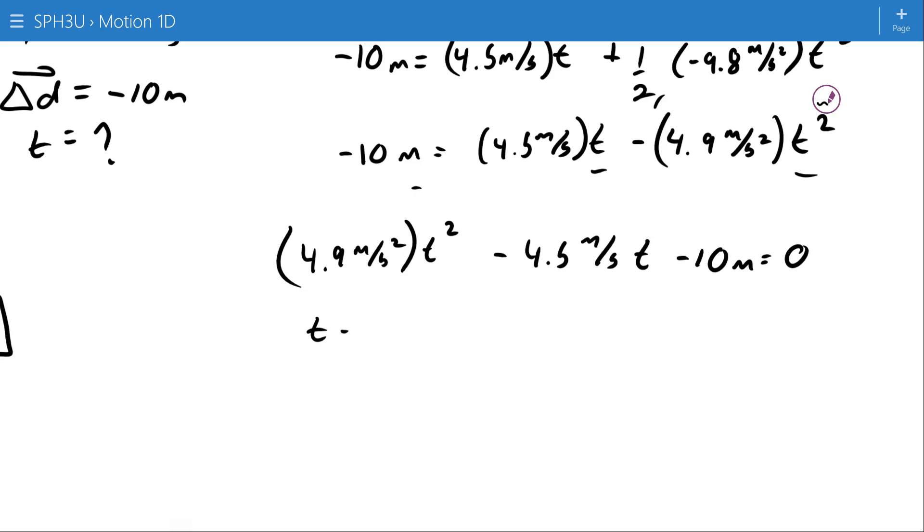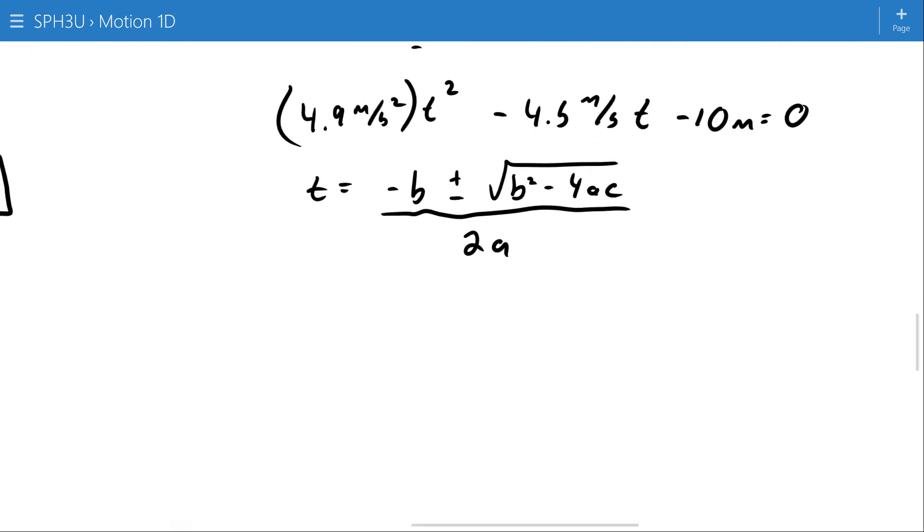And remember, the formula here is that T is equal to negative B, plus or minus the square root of B squared, minus 4AC, all divided by 2A. This is A. This is B. Don't forget that negative, so I can just view that as plus minus that. And this is C. And again, don't forget the negative on C when you're doing it.